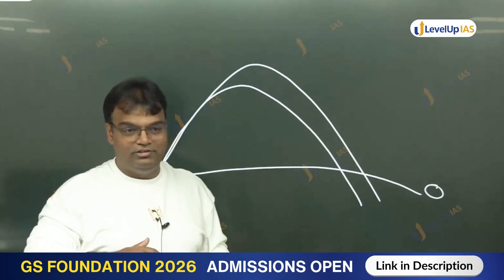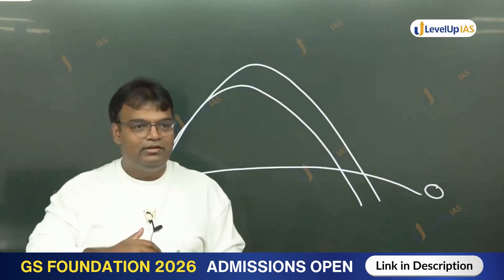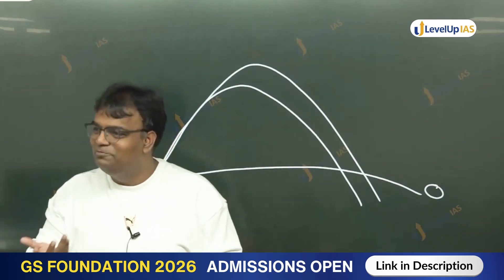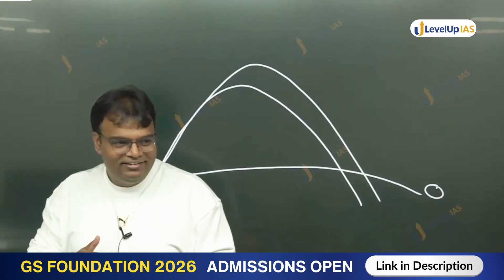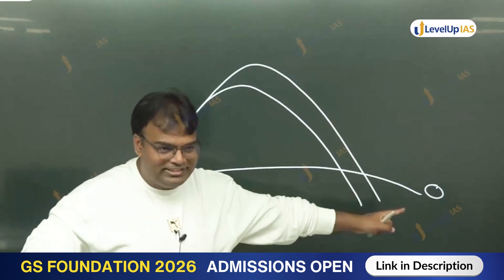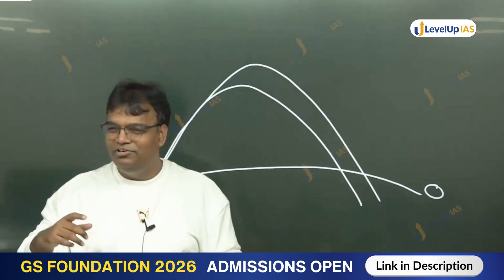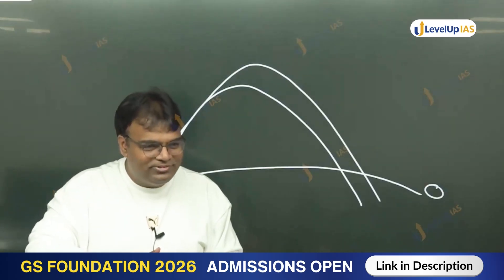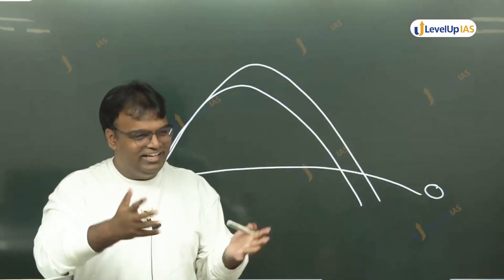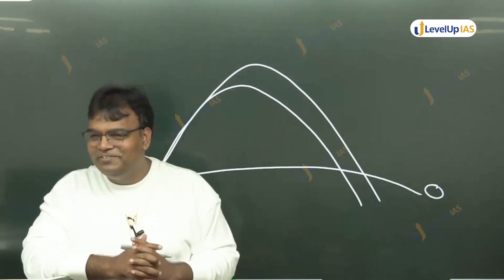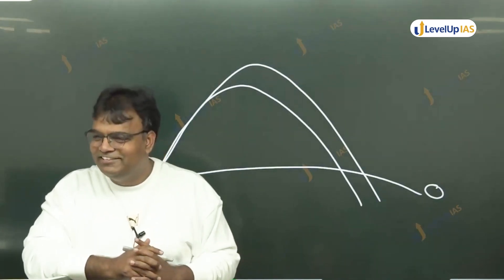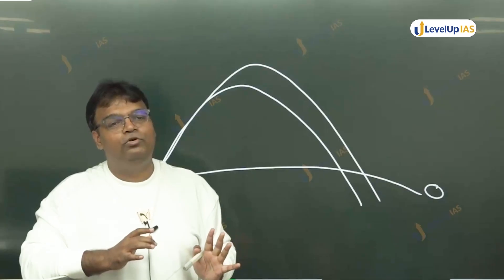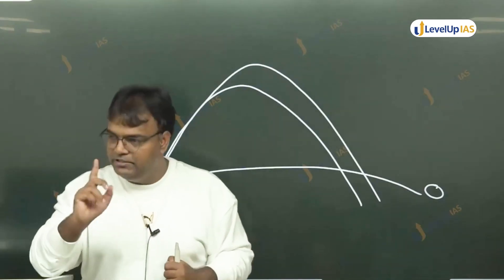Do you know how projectile motion works? It's a whole chapter in class 11 mechanics — projectile motion, how much distance, what will be the displacement? The equations involve terms like UT plus half AT squared. I've forgotten all those formulas, but this is projectile motion, and this is exactly how a ballistic missile works.